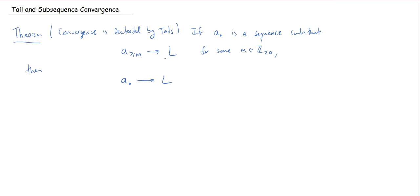This is right in line with the idea that the sequence really only cares about what happens in the long run. You don't care about the first few terms. So let's write down a proof of this — it's going to be actually very, very short. Since every tail of the tail A-greater-than-or-equal-to-M — this tail sub-sequence — is also a tail of the original sequence A.